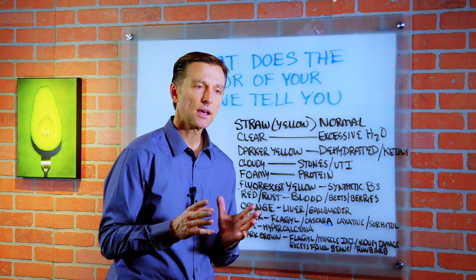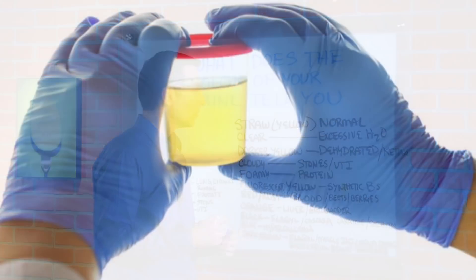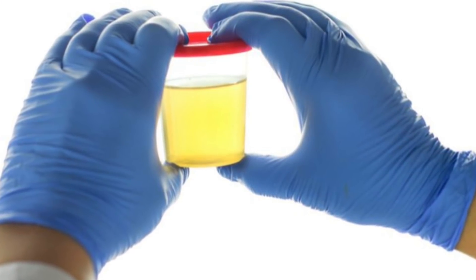In this video, we're going to talk about what the color of your urine will tell you about your body. Normal should be straw yellow color.